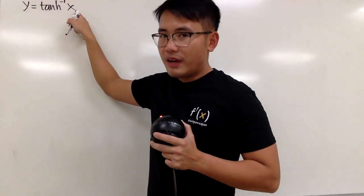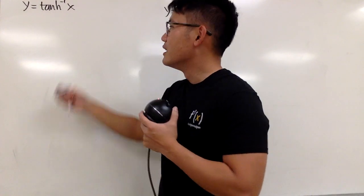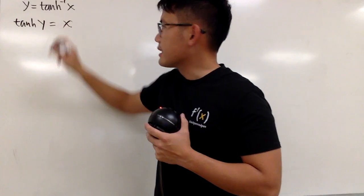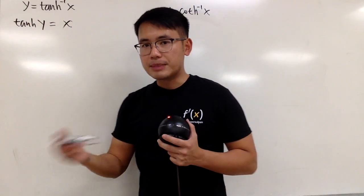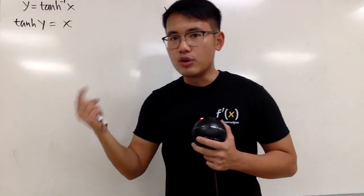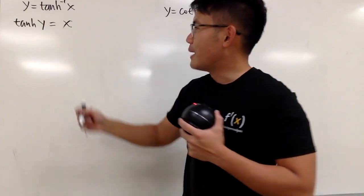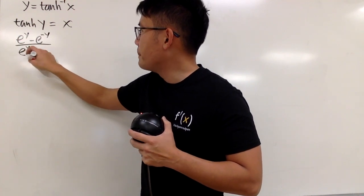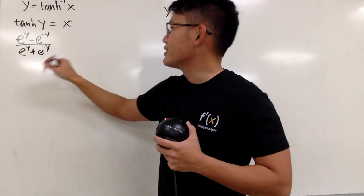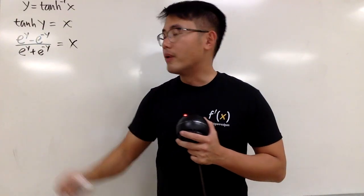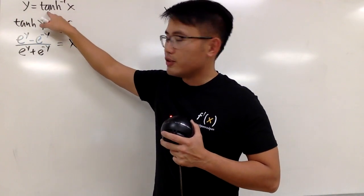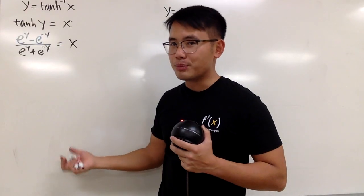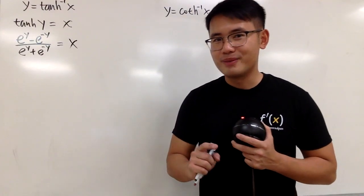Let y equal the inverse hyperbolic tangent of x. Applying the original version first, we get the hyperbolic tangent of y equal to x. From here, we can utilize the exponential definition — tanh is the same as sinh over cosh — which gives us e to the y minus e to the negative y, over e to the y plus e to the negative y, equal to x. Remember, y is the inverse hyperbolic tangent, and we want to isolate y to get an expression in terms of natural log.